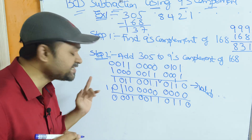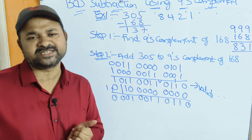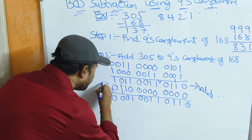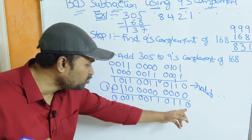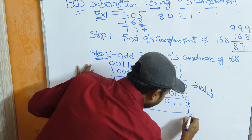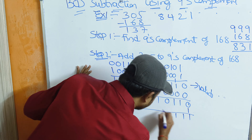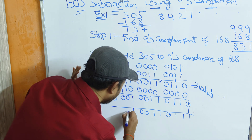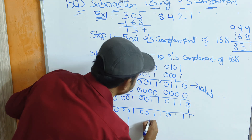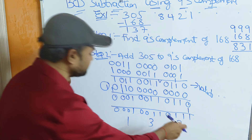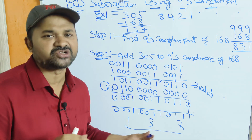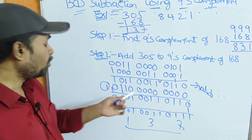Since the carry is 1, we add 1 to the least significant bit of the result. Adding 1 to LSB: 0+1=1, with no change to the other groups. So the result in BCD groups is: 0001 which is 1 in decimal, 0011 which is 3, and 0111 which is 7. So the result is 137. We got 137, confirming our solution is correct.